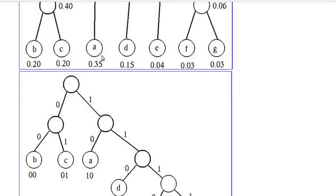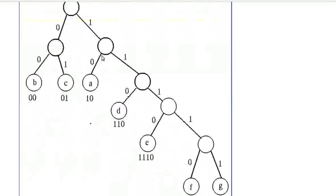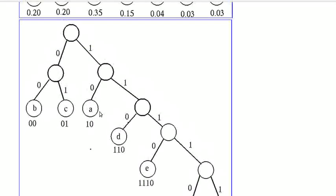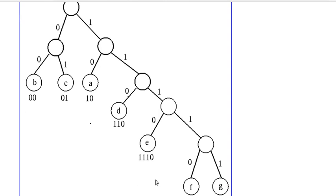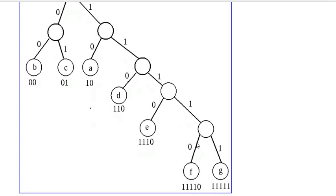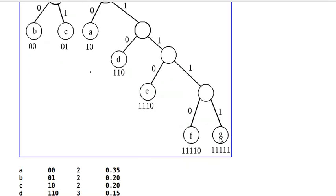We can redraw the tree like this and obtain the codewords by traversing the tree. For A it is 10, B 00, C 010, D 110, E 1110, F 11110, G 11111.